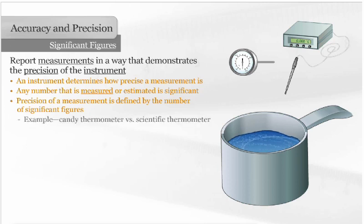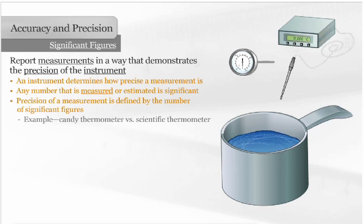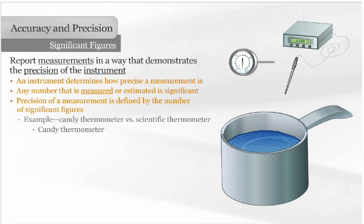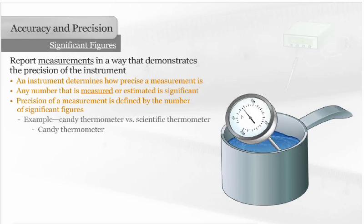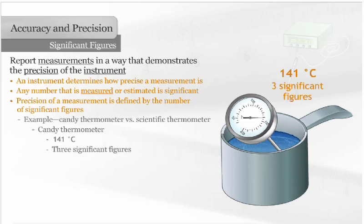For example, compare a typical candy thermometer to a high-precision thermometer that can measure thousandths of a degree. With a candy thermometer, a chef can measure the temperature of a hot sugar solution to degrees Celsius, 141 degrees for instance. 141 degrees has three significant figures.